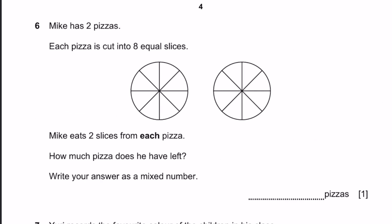Question 6. Mike has two pizzas. Each pizza is cut into eight equal slices. Mike eats two slices from each pizza. How much pizza does he have left? Two slices from each pizza means two are gone here and two are gone here. There is three-fourths of a pizza left here and three-fourths over here. That would be 3/4 plus 3/4, which equals 6/4, and this can be written as one and a half pizzas.